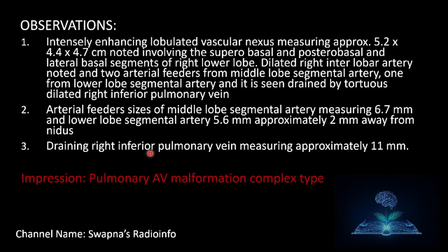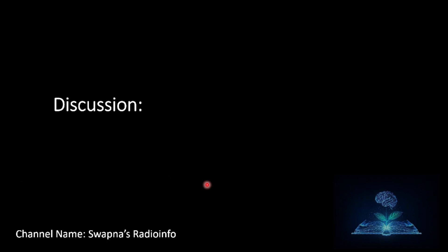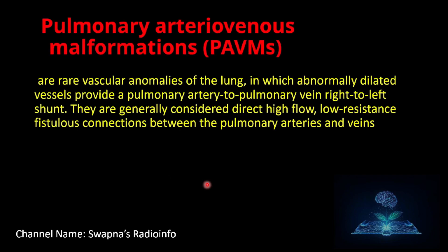Observations: an intensely enhancing lobulated vascular nidus measuring approximately 5.2 × 4.4 × 4.7 cm was noted involving the superior basal, posterior basal, and lateral basal segments of the right lower lobe. A dilated right interlobar artery was noted. Two arterial feeders — one from the middle lobe segmental artery and one from the lower lobe segmental artery — drained by the dilated tortuous right inferior pulmonary vein. Middle lobe segmental artery measured 6.7 mm and lower lobe segmental artery measured 5.6 mm; draining right inferior pulmonary vein measured approximately 11 mm. A diagnosis of complex-type pulmonary arteriovenous malformation was made.